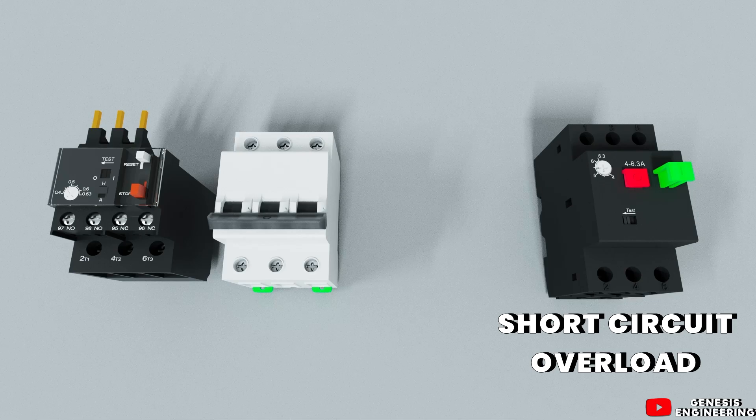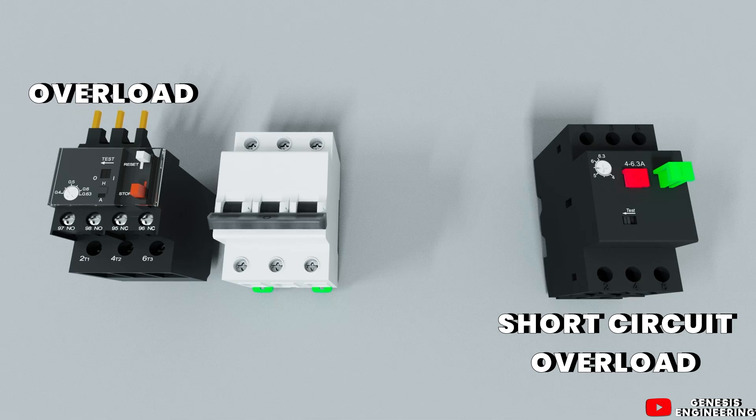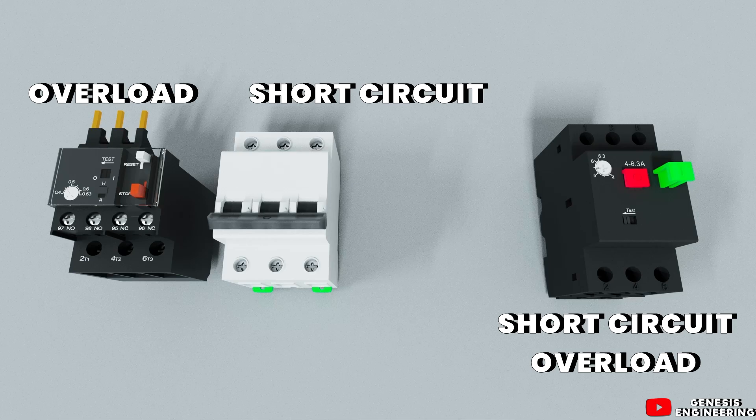The thermal relay only protects the motor against overload. So when we use the thermal relay in the circuit, it is necessary to also use a 3-pole MCB for protection against short circuit. The 3-pole MCB will protect the conductors and circuit components against short circuit.